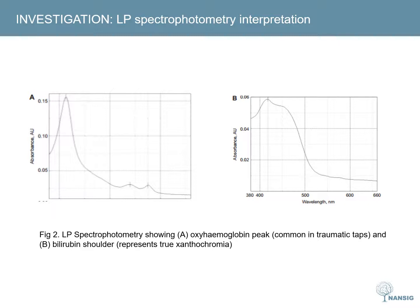It is important that this sample is sent to the lab quickly, spun down, and protected from light, as exposure can accelerate the breakdown of blood to form oxyhaemoglobin. Bilirubin is only formed in vivo from the breakdown of oxyhaemoglobin, and therefore will not be present on a traumatic tap.